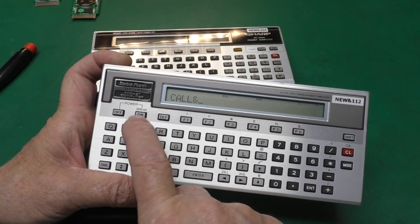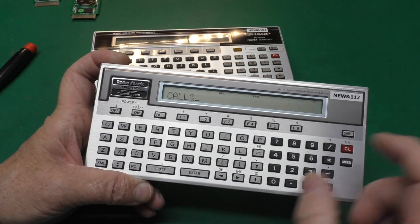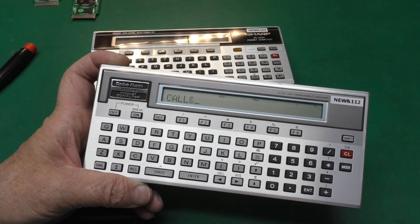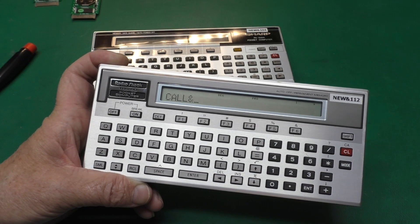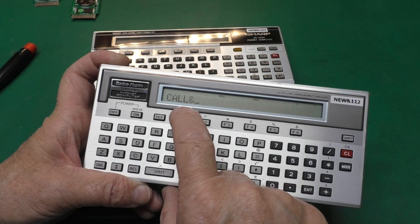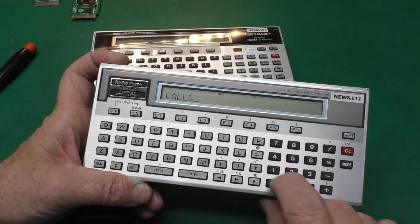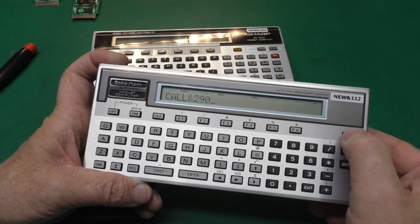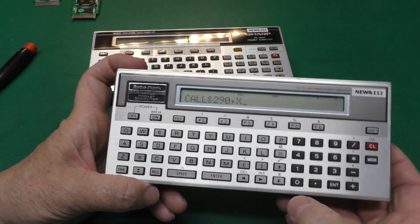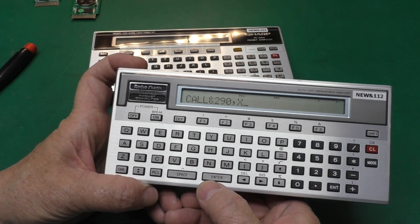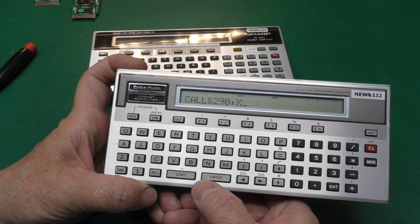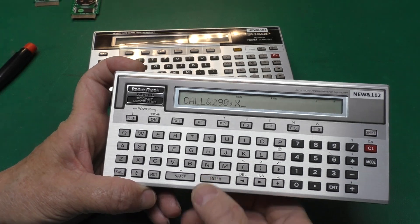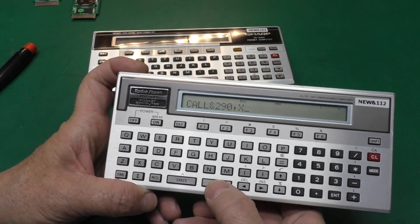The convention on these computers is to use the at symbol for hexadecimal to not confuse it with the dollar symbol, which are strings in BASIC. So anyhow, call 290, comma, X. Now watch the screen here real close. It will pop some stuff up there as it's working. On the PC 1500A, the things you type in are slightly different, but that's all in the manual.